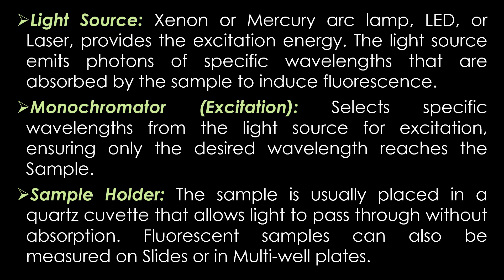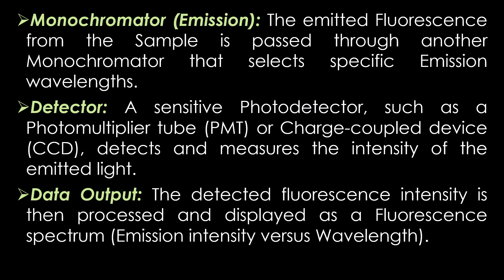The excitation monochromator selects specific wavelengths from the light source for excitation, ensuring only the desired wavelength reaches the sample. The sample is usually placed in a quartz cuvette that allows light to pass through without absorption. Fluorescent samples can also be measured on slides or in multiwell plates.